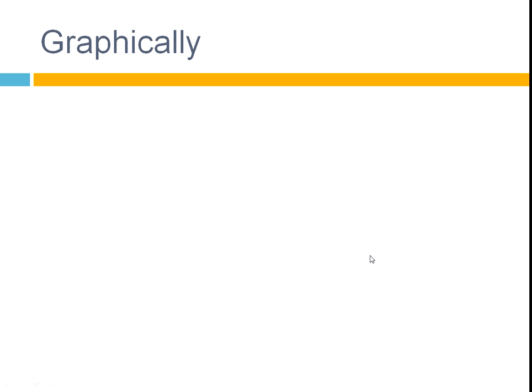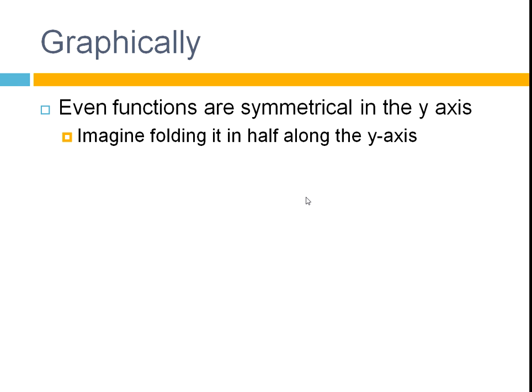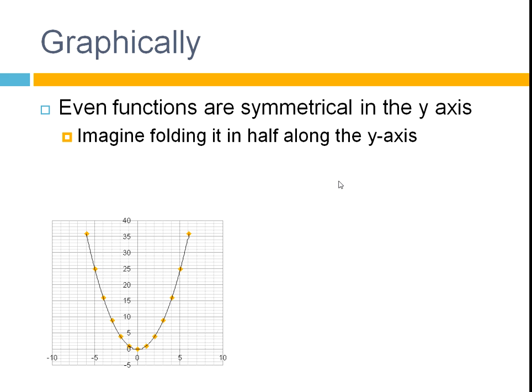And you can tell just by looking at the graphs. That's another way that you can do it. So even functions are symmetrical in the y-axis. You imagine folding it in half across the y-axis and the graphs will overlap. This is, as you know, y equals x squared, which we know is an even function. When you look at the graph and imagine folding it across the y-axis here, that part of the graph will overlap with that once you fold it. So hence, even function.